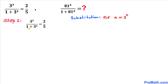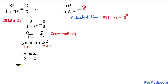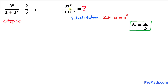After substitution, the equation can be written as a divided by (1 + a) equals 2 divided by 5. Now let's cross multiply: 5a equals 2 plus 2a. Subtract 2a from both sides, giving us 3a equals 2, so a equals 2/3.